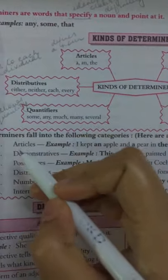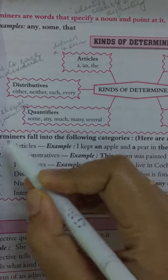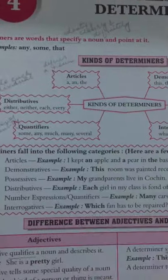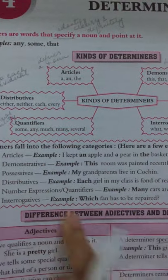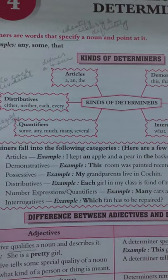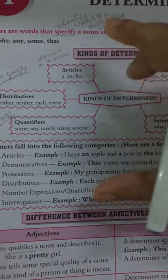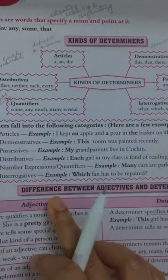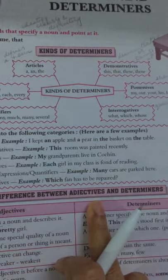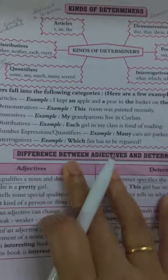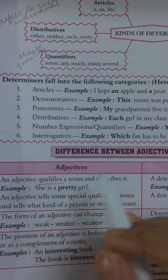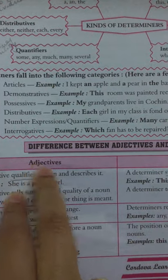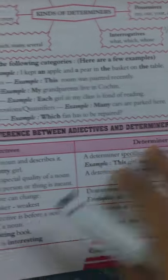We will go into the details of these kinds of determiners further in this chapter. First, let us see the difference between adjectives and determiners. You can see two columns — on the left side adjectives, and on the right side determiners.